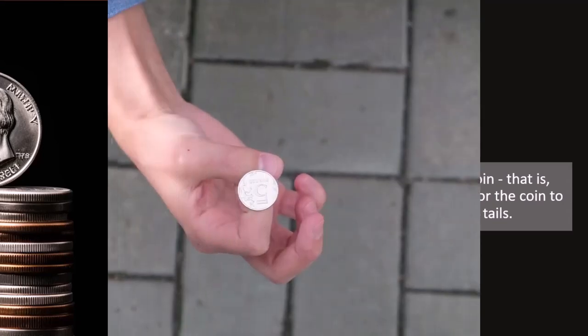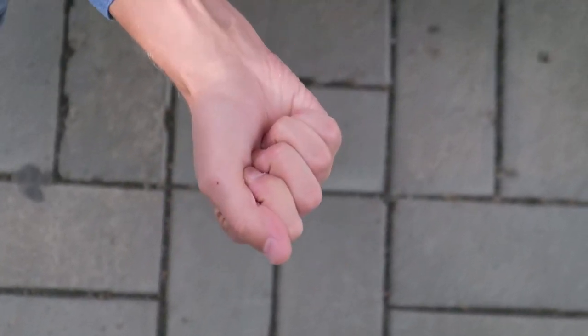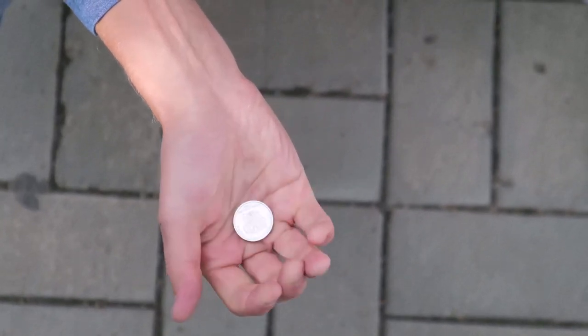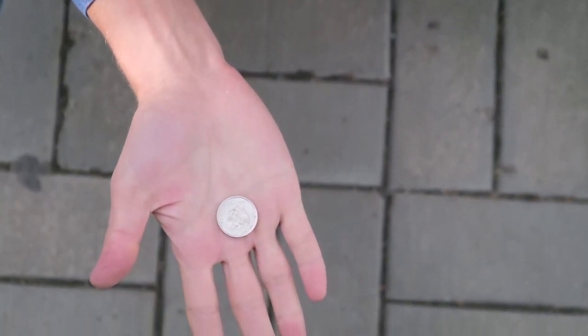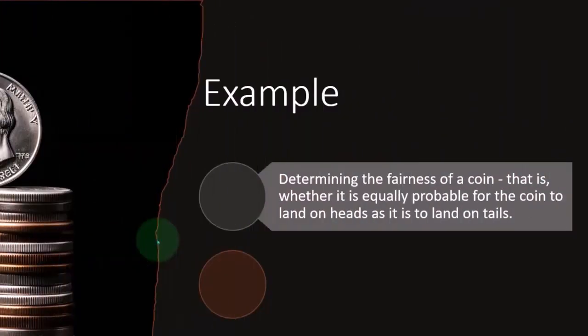And if we flip the coin multiple times, we would expect that there's going to be an equal number of times that it's going to have heads versus tails, or at least the probability of it landing heads and tails should be equal. That would be the assumption we would have. And that would be basically our null type of assumption.